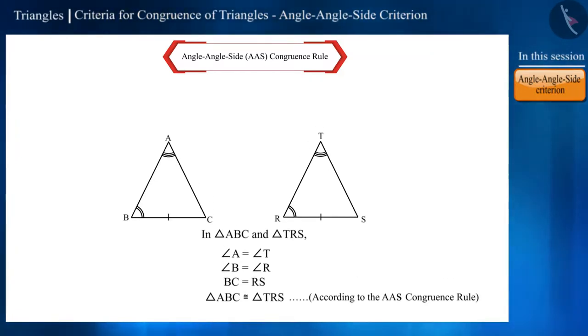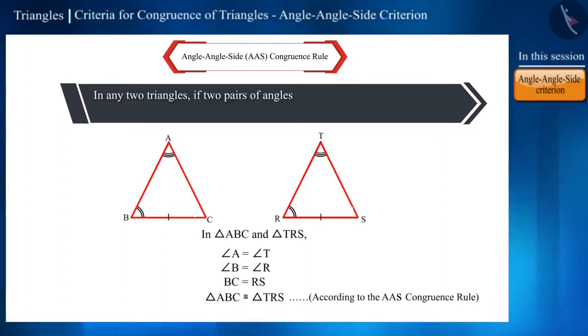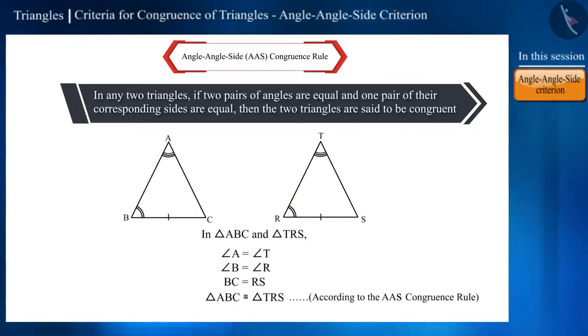That's why we can say that, in any two triangles, if two pairs of angles are equal and one pair of their corresponding sides are equal, then the two triangles are set to be congruent.